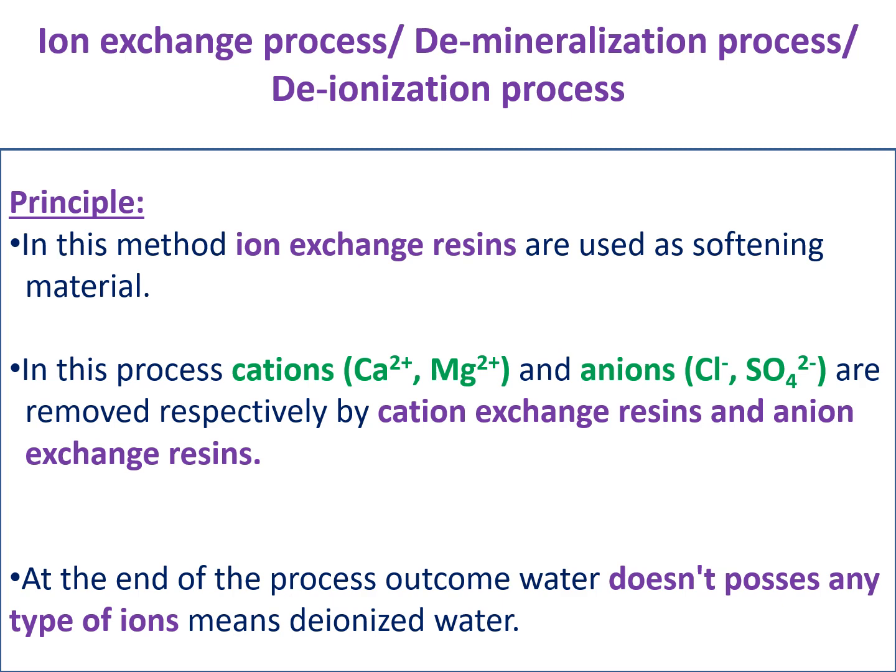The cation exchange resin exchanges all cations present in the hard water — Ca²⁺ and Mg²⁺ ions are exchanged by the cation exchange resin. All anions like Cl⁻, SO₄²⁻, and HCO₃⁻ are replaced by the anion exchange resin. Finally, the output water doesn't possess any type of ion — that is why this process is called the deionization or demineralization process.